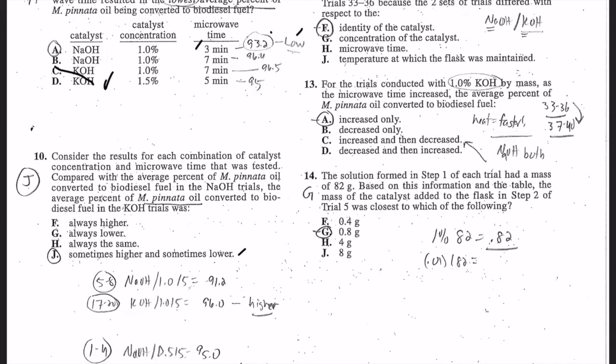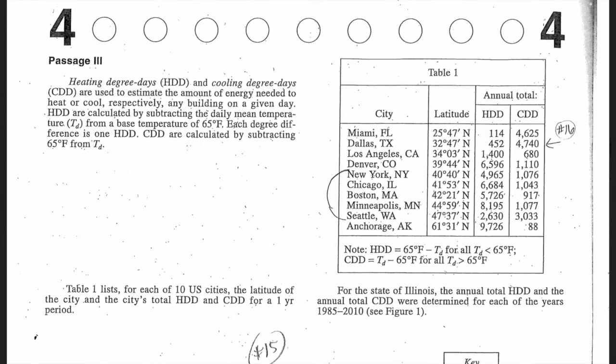Number 11: I think I said there were 44 trials, so you can mark off the 11's right there. If you go back through the reading, there's 80 milliliters of methanol in each sample, so it's 44 times 80. Number 12: the identity catalyst is different - 25 and 33. Number 13: the KOH is faster, so it increased only. As the microwave time increased, it increased only. Number 14: it's a simple math problem. One percent is 0.01 times 82 is 0.82, which is close to 0.8. You don't have to use a calculator.